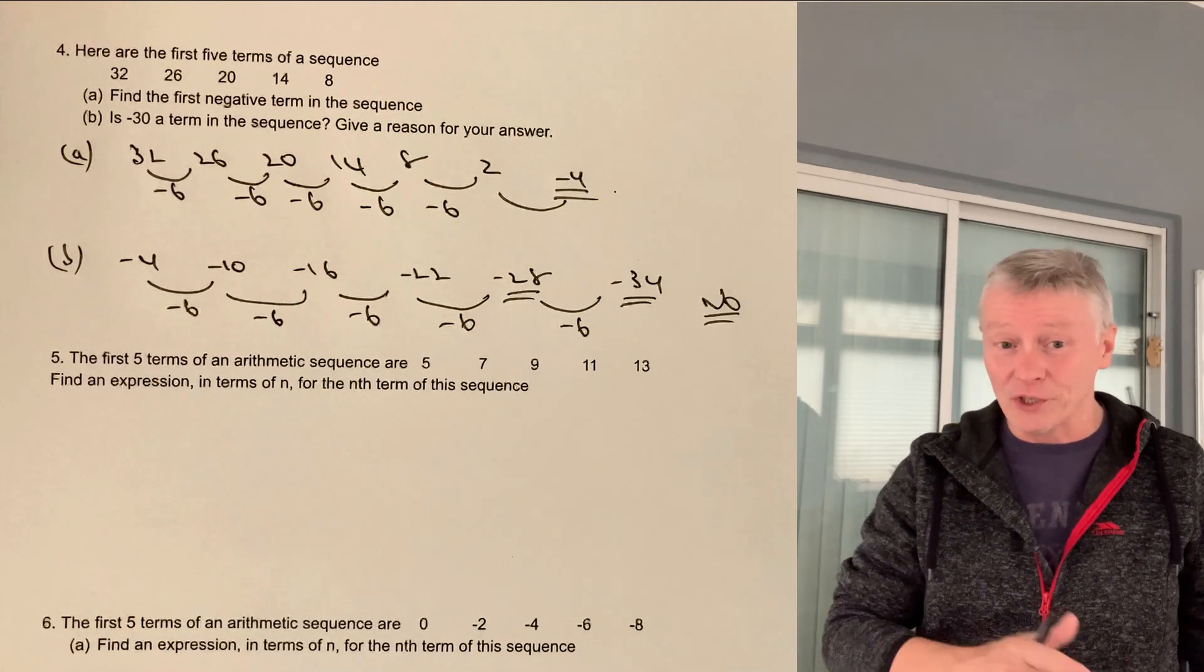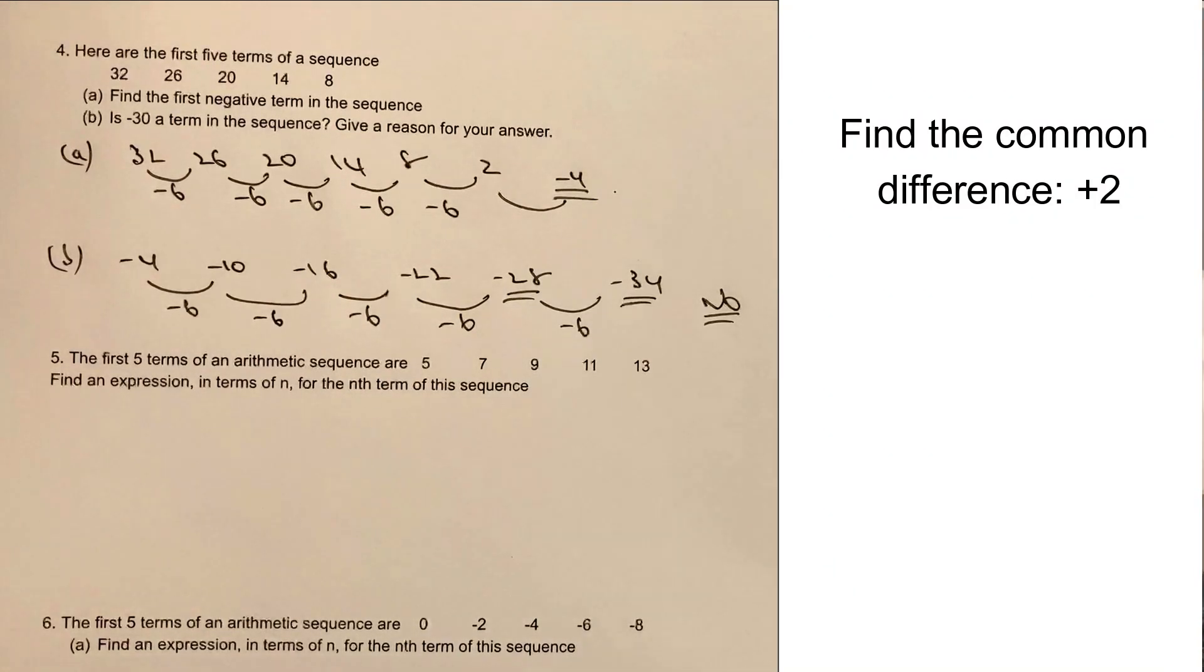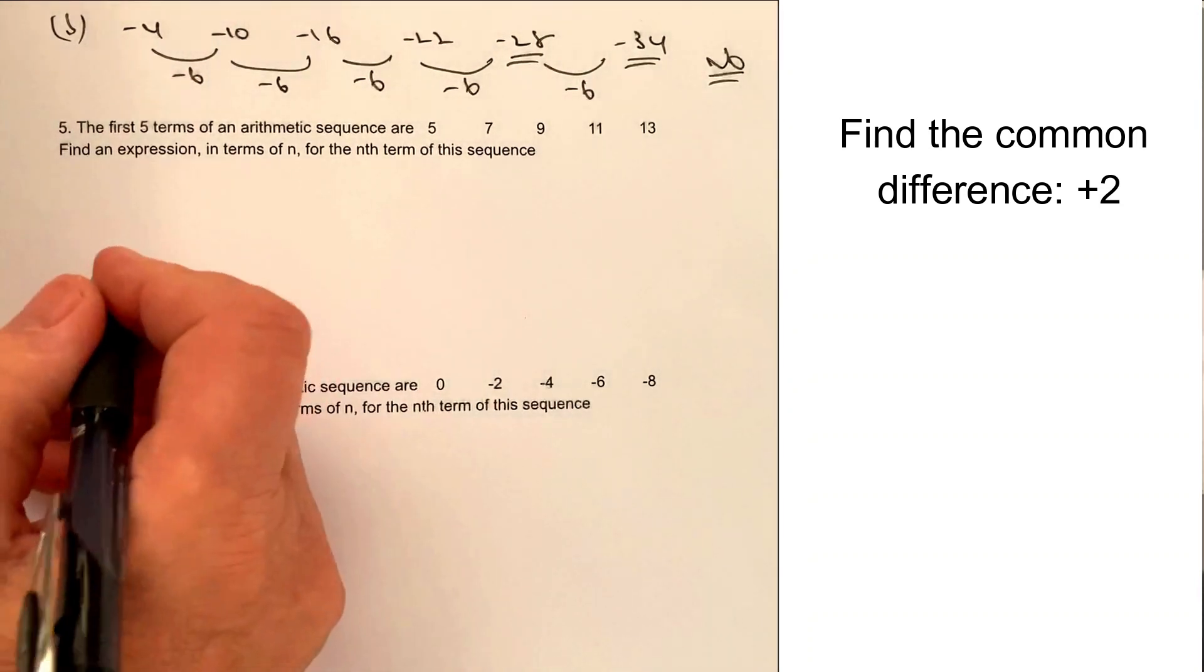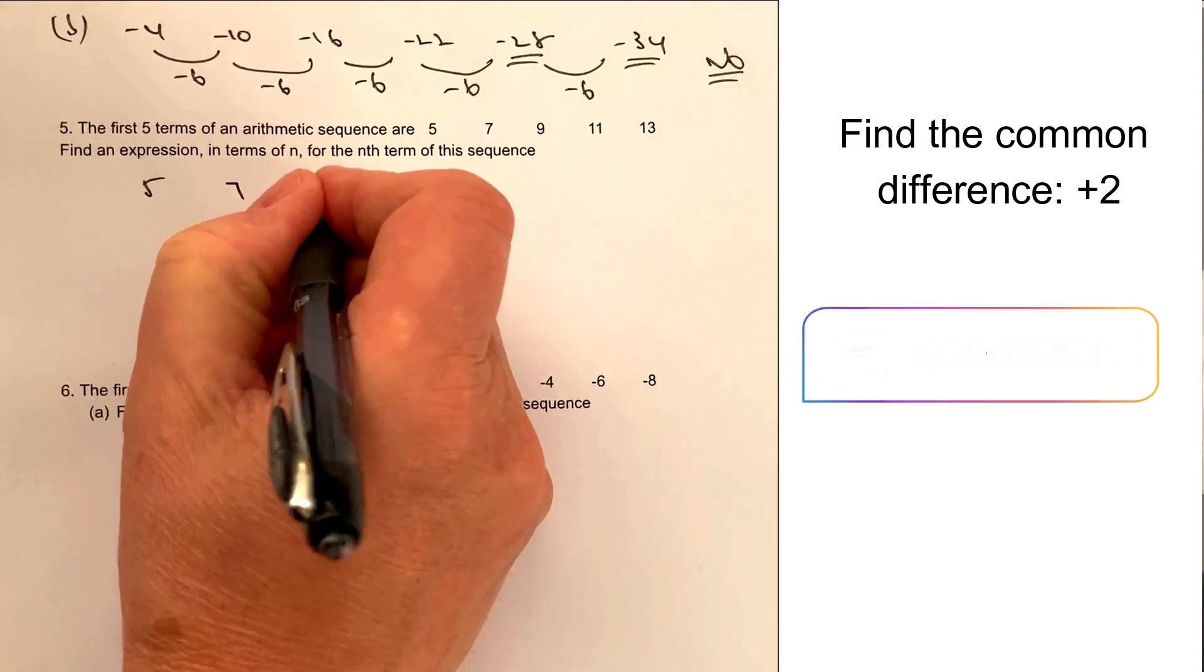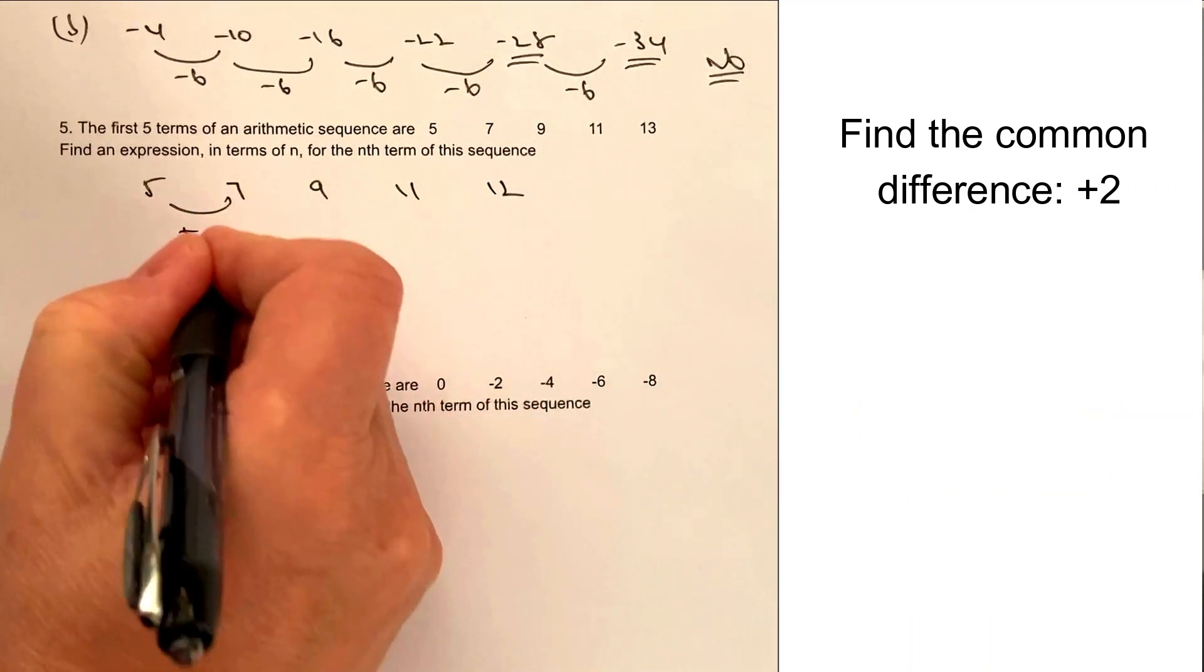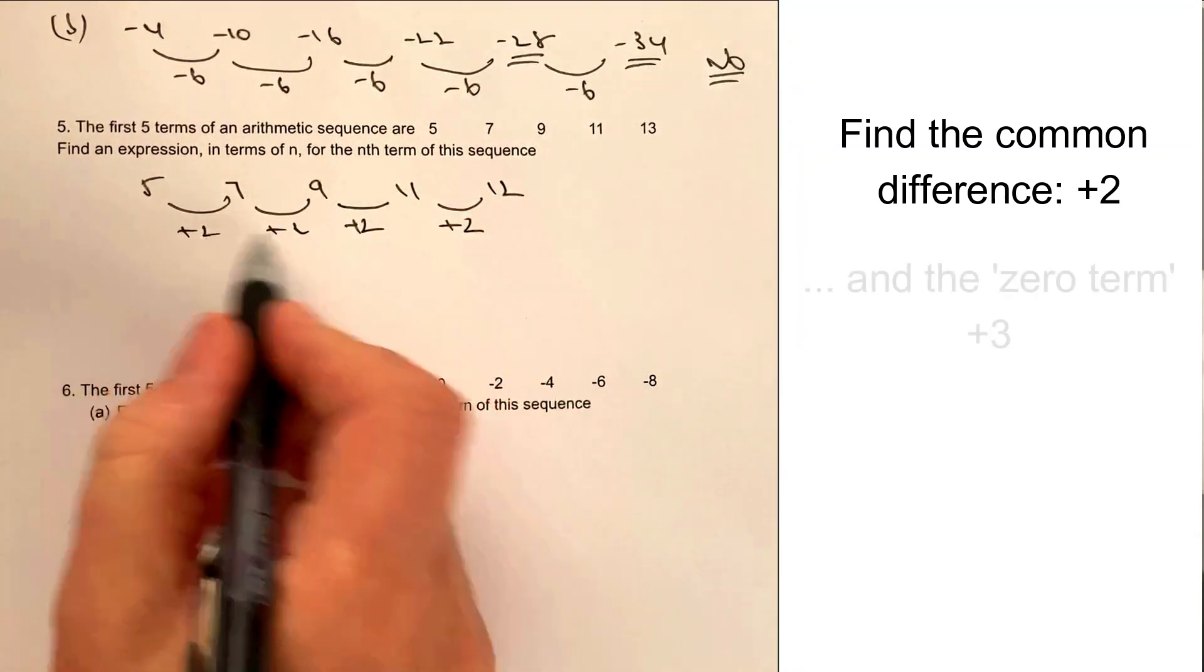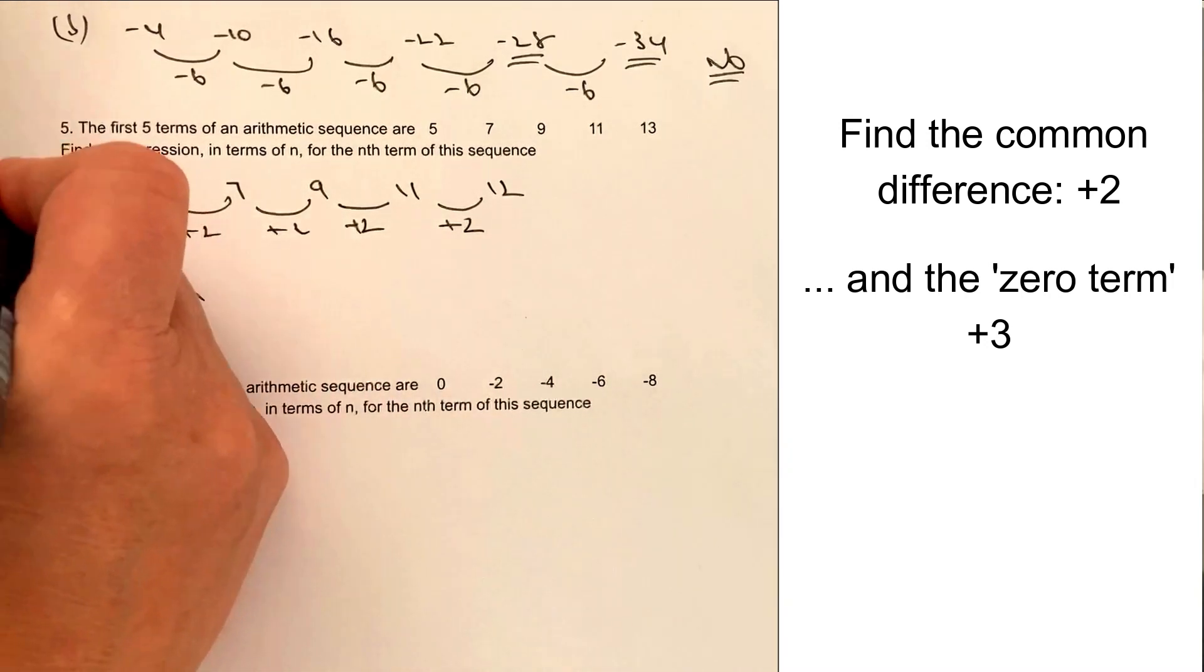Let's move on to the final two questions in this particular worksheet. Don't forget to download them or stop the video and have a go at this particular question. So question number 5, we've got now the first 5 terms, and in this particular case, we're being asked to find the nth term of the sequence. Now, you can visit my website and have a look at how to do this. But basically, what we can see here is that we've got a difference. These are called common differences of plus 2, each number in this particular sequence. So therefore, the common difference is 2. We write that as 2n.